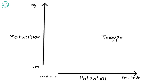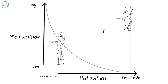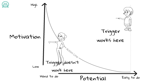There's a relationship between motivation and potential. This curved line — it's called the action line — shows that relationship. If someone is anywhere above the action line when they're triggered, they will do the behavior, they will perform. In this case, they will donate to your good cause. However, if they are below the action line when triggered, they will not perform the behavior.